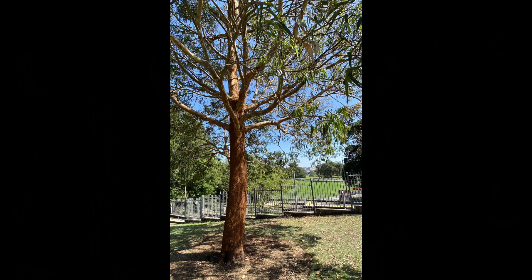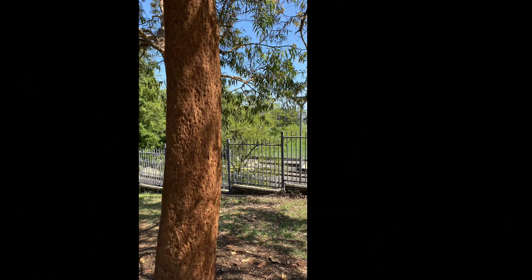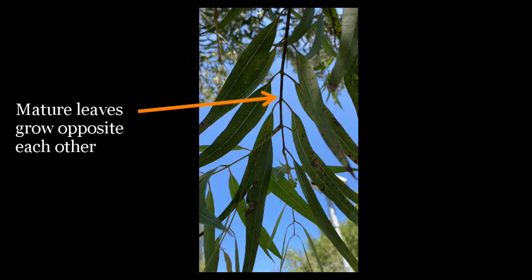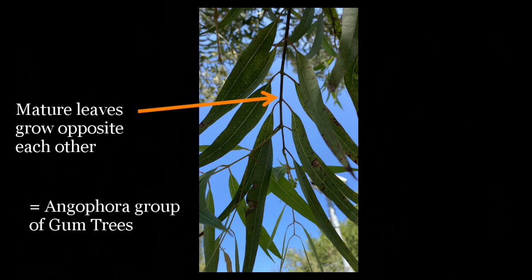Walking through a park in Glebe, we come across this particular tree. It's got smooth bark — it's one of the smooth bark gum trees — and that already narrows it down. Now, which of the three groups does it belong to? One way to work that out is to look at the leaves, and in this particular tree the leaves are growing opposite each other, and that puts it in the angophora group.